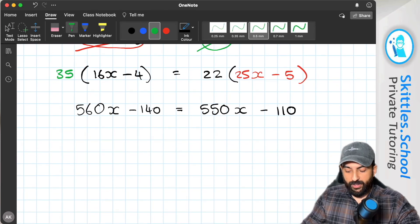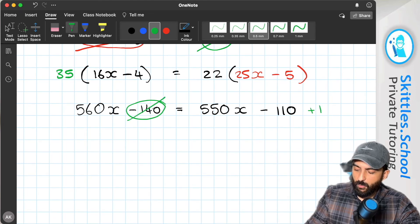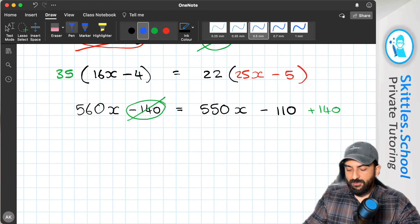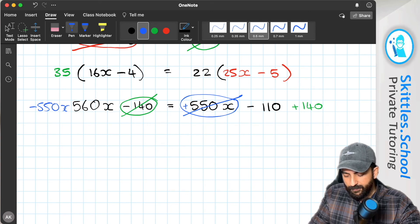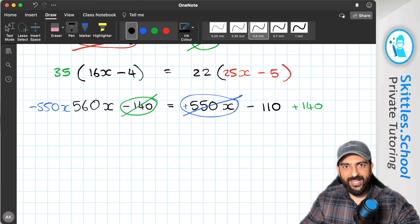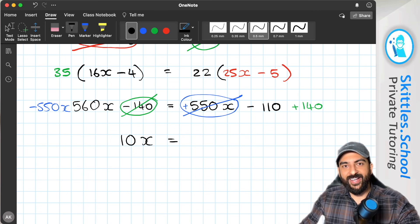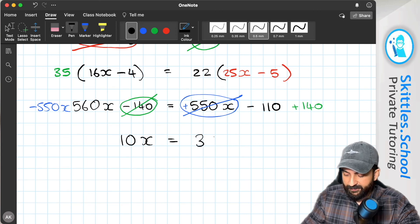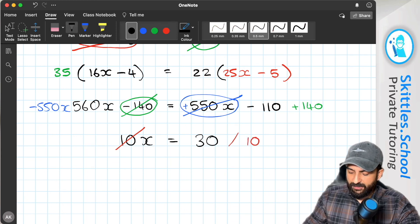Now, if we add 140 to each of these, that eliminates the 140 from there. And if we subtract 550x from both sides, that eliminates it from there. And now we just work this out. So 560x take away 550x is 10x minus 110. Add 140 is 30. And now we divide by 10.